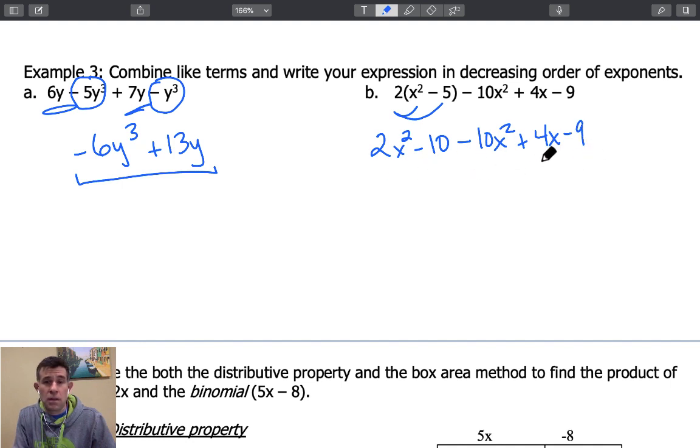Now as we go through, we're going to underline and circle our like terms. So I have an x squared term and a negative 10x squared we can combine. And then I have constants negative 10 and negative 9.